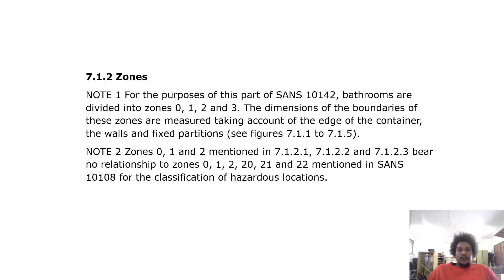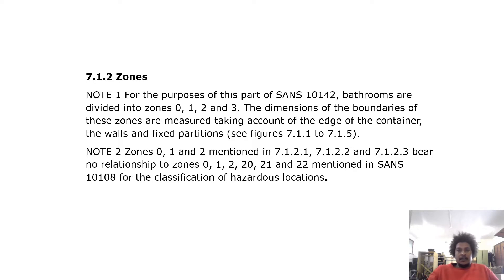Zones: for the purpose of this part of SANS 10142, bathrooms are divided into zones 0, 1, 2 and 3. The dimensions of the boundaries of these zones are measured taking account of the edge of the container, the walls and fixed partitions. Note: zones 0, 1 and 2 mentioned in 7.1.2.1 through 7.1.2.3 bear no relationship to zones 0, 1, 2, 20, 21 and 22 mentioned in SANS 10108 for the classification of hazardous locations.